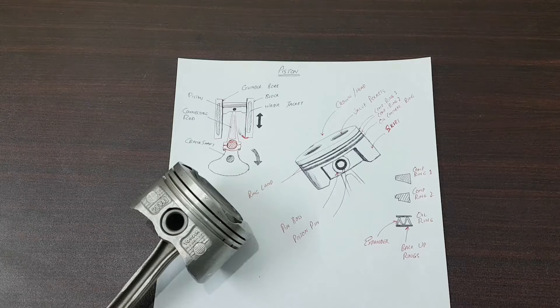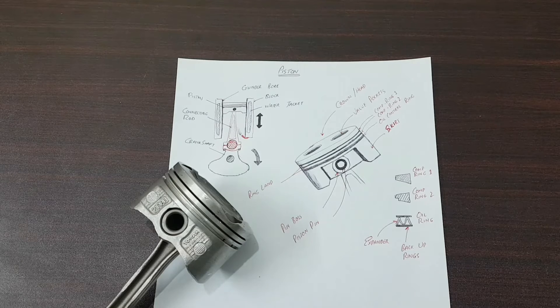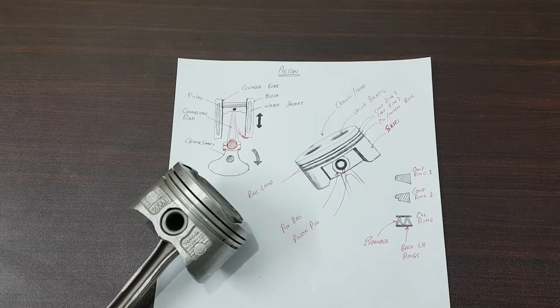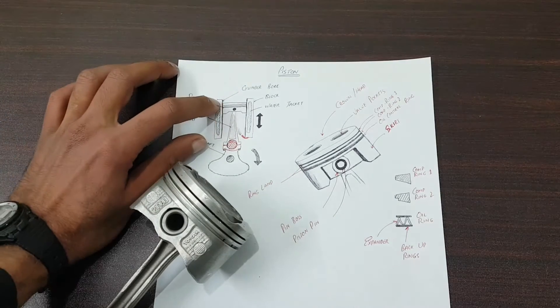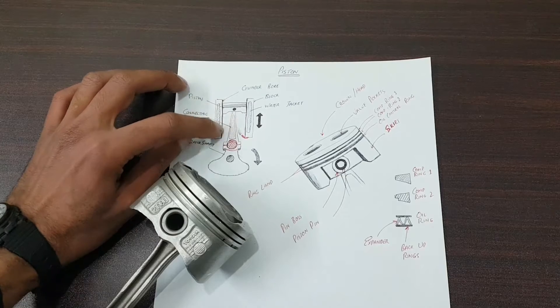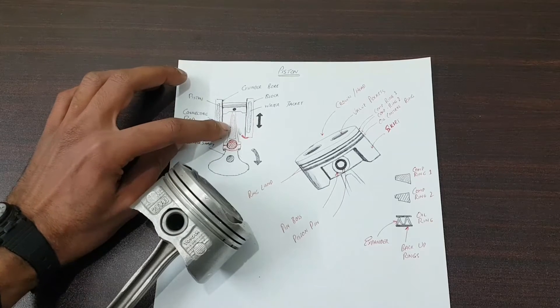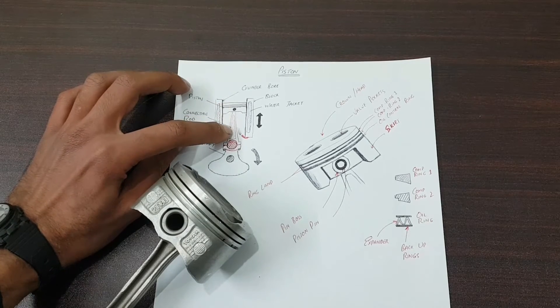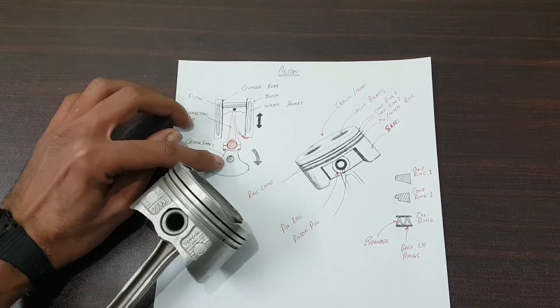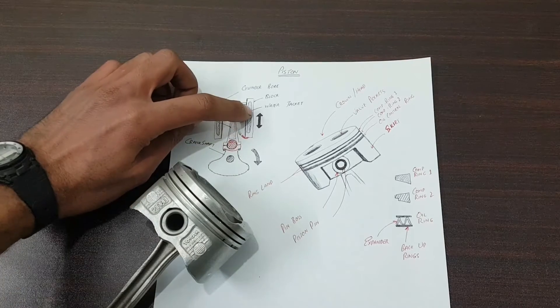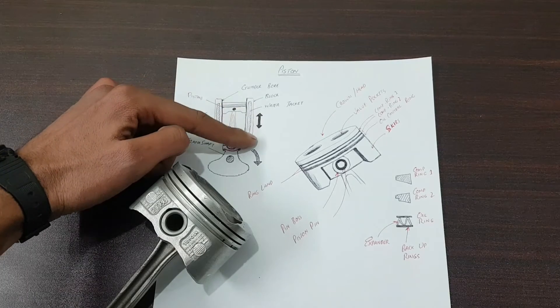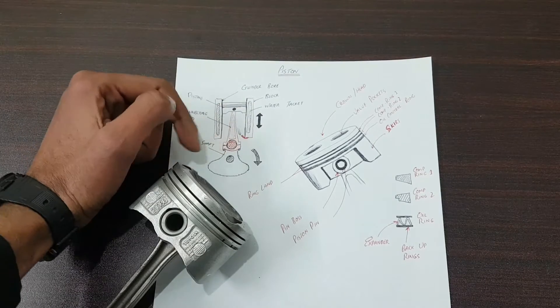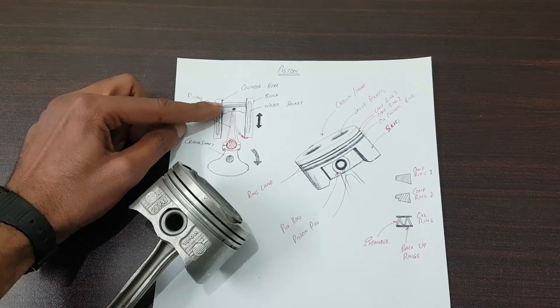Right now you can see here I have drawn a diagram in which you can see a piston reciprocates inside a cylinder. This piston is connected to a connecting rod, and from the downside it is connected to a crankshaft. The piston moves between top dead center and bottom dead center - this is known as its reciprocation.